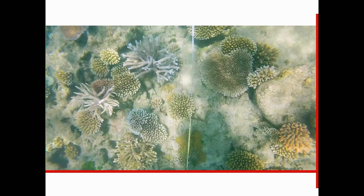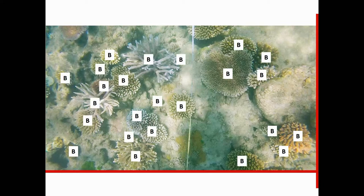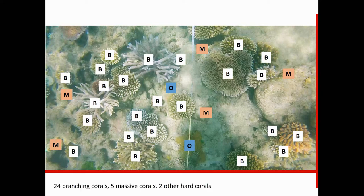In this third image we again have lots of branching corals, five mound-shaped or massive corals, and two other hard corals — giving a total of 24 branching, five massive, and two other hard corals.